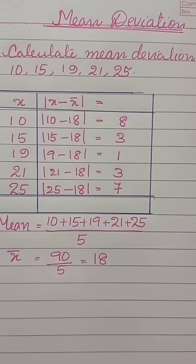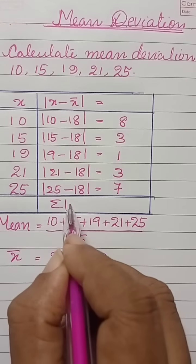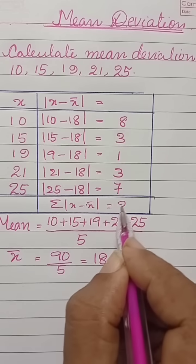We got x minus x bar, after that we find the sum of x minus x bar, it is equal to 22.